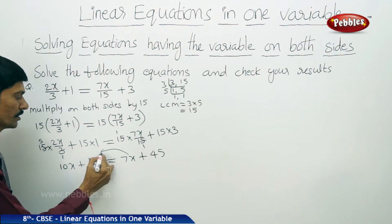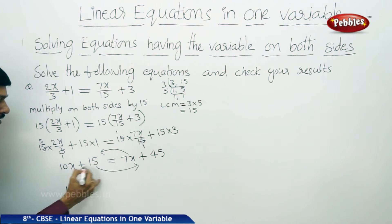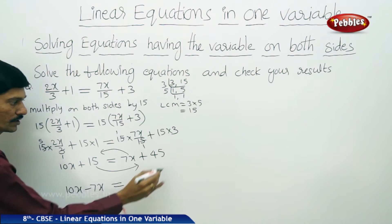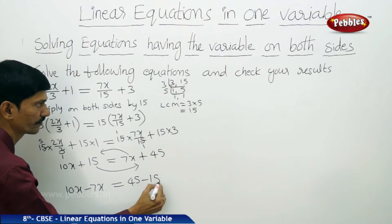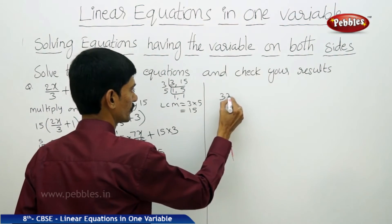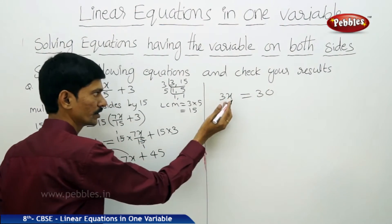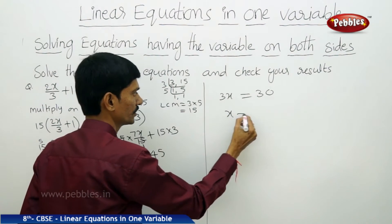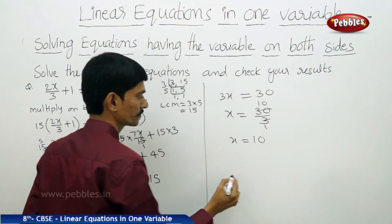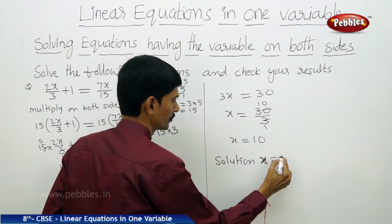Now transpose 7x to LHS and 15 to RHS. 10x minus 7x is 3x, which equals to 45 minus 15 equals 30. Transposing the 3 to RHS gives x equals to 30 by 3. Since 3 ones are 3 and 3 tens are 30, x equals to 10. The solution of the equation is x equals to 10.